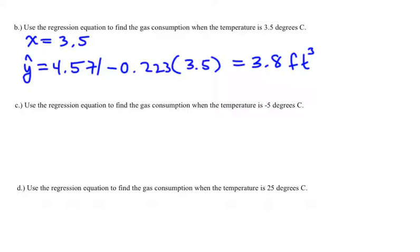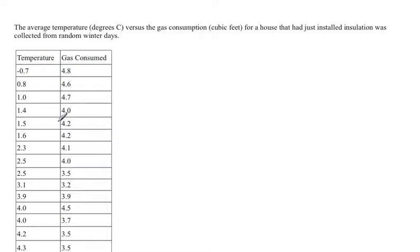So you find out that that's 3.8 cubic feet of gas consumed. Let's go back and look at the data. I do notice that we don't actually have a 3.5x, but it's somewhere between 3.1 and 3.9, and we just got the cubic feet of 3.8, which happens to actually be somewhere between 3.2 and 3.9. So it looks like we actually did receive a fairly good prediction.